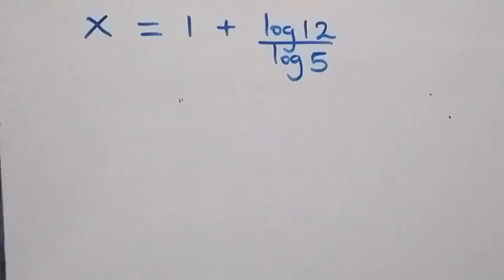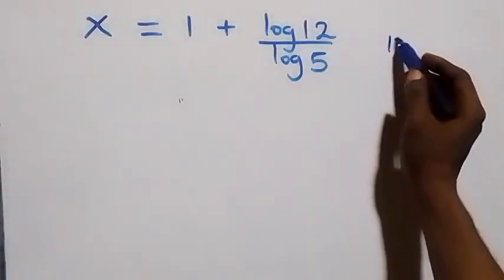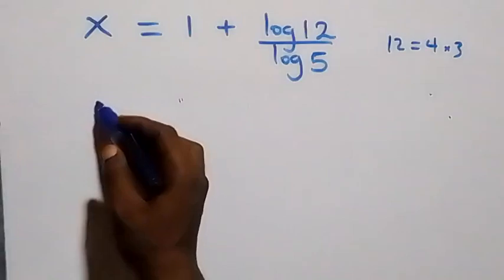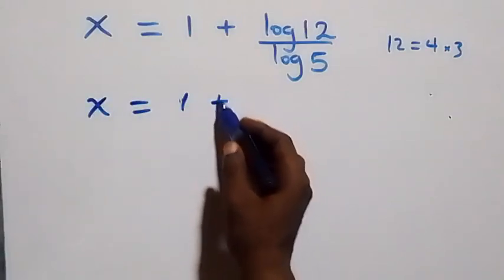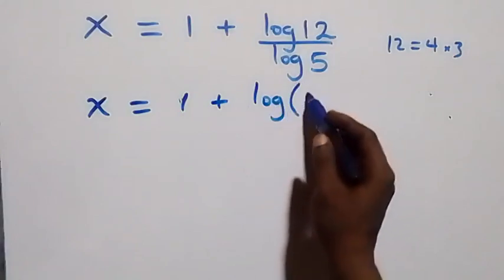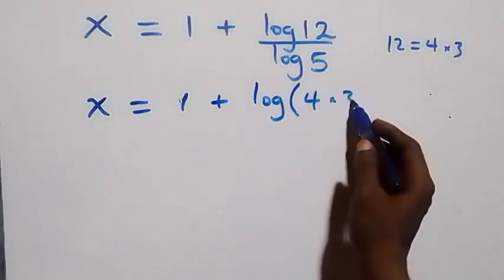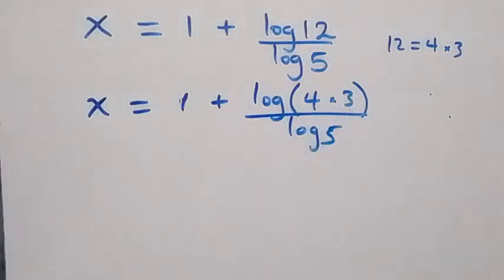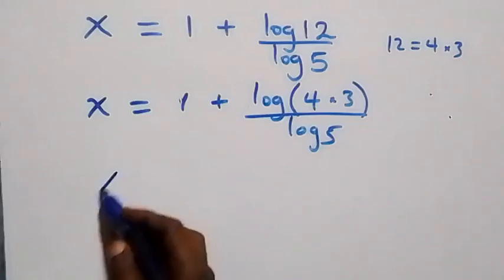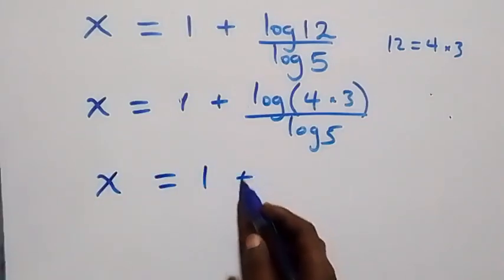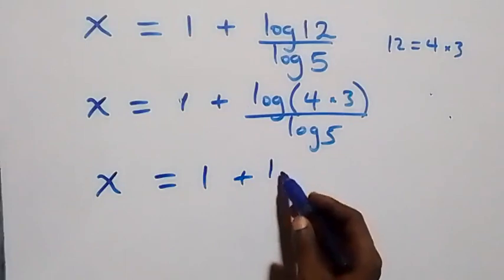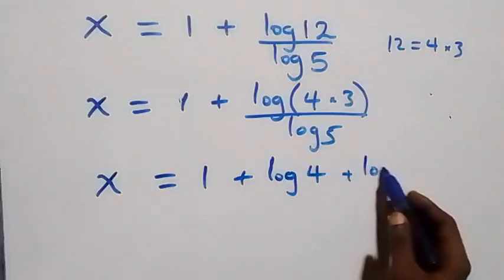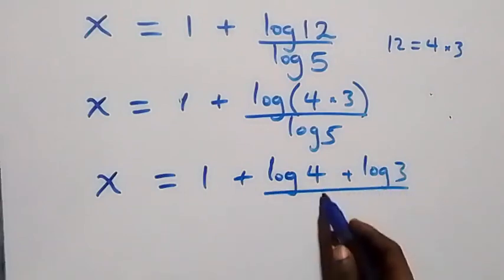From here we express 12 as 4 times 3, so x equals 1 plus log(4×3) over log5. Applying the product rule again, this becomes x equals 1 plus log4/log5 plus log3/log5.